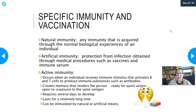Vaccination takes advantage of the specific immunity reaction. Natural immunity is acquired through normal biological experience — like getting sick. Artificial immunity is protection obtained through a medical procedure such as vaccines. Active immunity occurs when an individual receives an immune stimulus that activates B cells and T cells, producing antibodies and cytotoxic T cells and creating memory for quick action upon re-exposure. Active immunity requires several days to develop but lasts decades, and can be stimulated naturally by getting sick or artificially by vaccination.